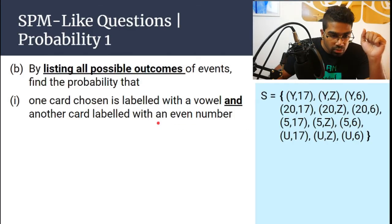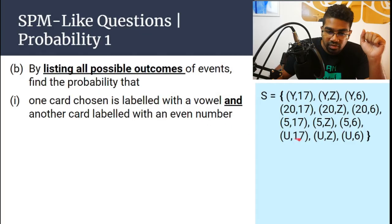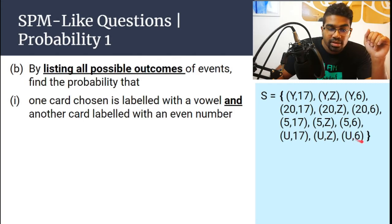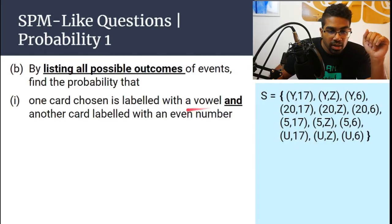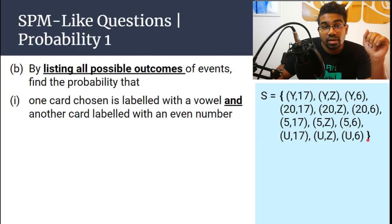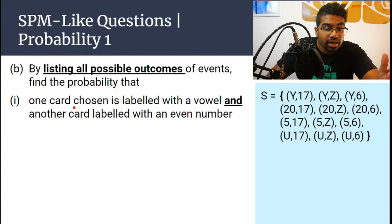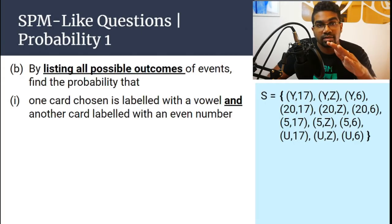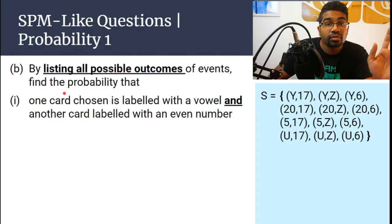Now let's look at U. U is a vowel — yes, we have a vowel. We need to find another card labelled with an even number. 17 is an odd number — not counted. Z is not a number — not counted. 6 is an even number. So the only outcome that satisfies both conditions — a vowel as well as an even number — is U6. In this question, it is not specified whether the first card has to be the vowel or the second card, so it doesn't matter here.